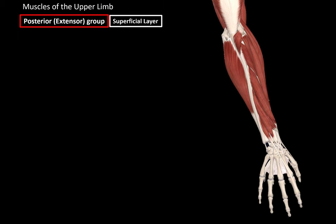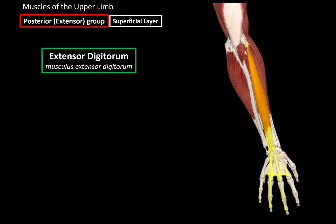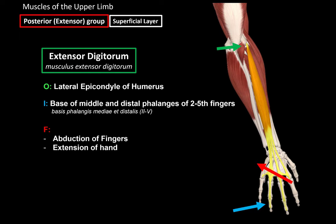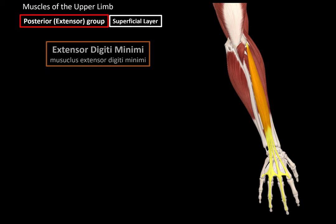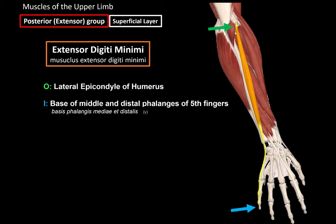Now for the superficial muscles — the extensor digitorum originates from the lateral epicondyle of the humerus and inserts at the base of the middle and distal phalanges of the second to fifth fingers. Its function is to abduct the fingers and extend the hand backwards. Then we have the extensor digiti minimi, which also originates from the lateral epicondyle of the humerus and inserts at the base of the middle and distal phalanges of the fifth finger; its major function is extension of the little finger.